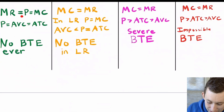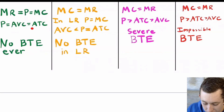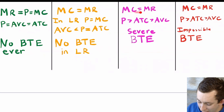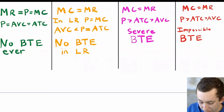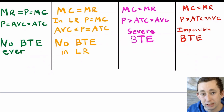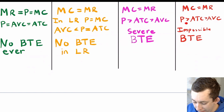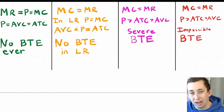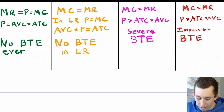Mathematically, in perfect competition marginal revenue equals price because we're a price taker, and that equals marginal cost. Price equals average variable cost equals average total cost, meaning zero profit in the short or long run. In the other markets we set marginal cost equal to marginal revenue. In monopolistic competition in the long run, price equals marginal cost — zero long-run profit. In the short run, price is greater than average variable cost — positive short-run profit. In oligopoly, duopoly, and monopoly, price is greater than average total cost, meaning positive economic profit in both the short and long run.